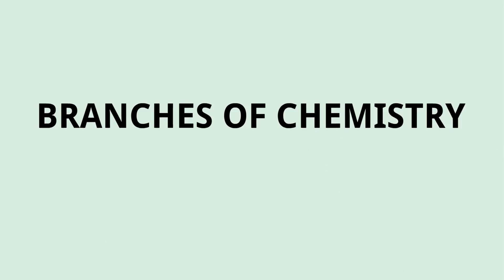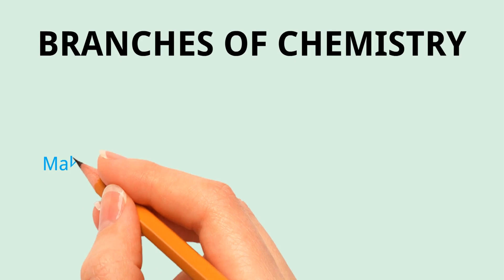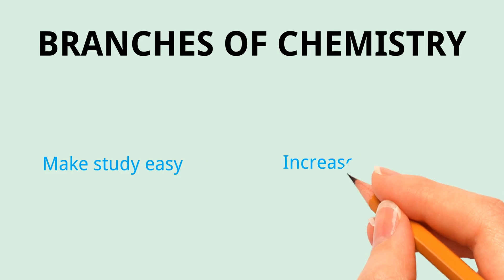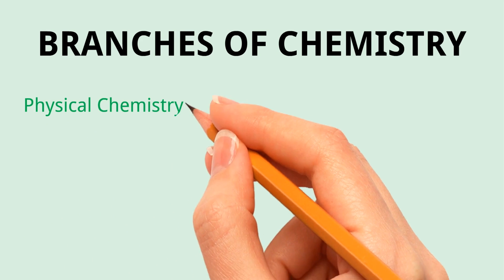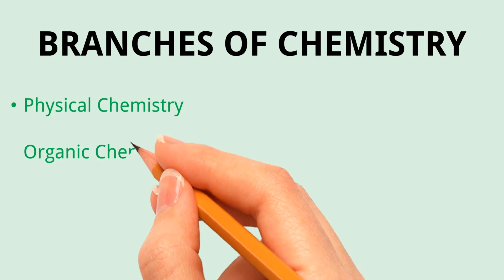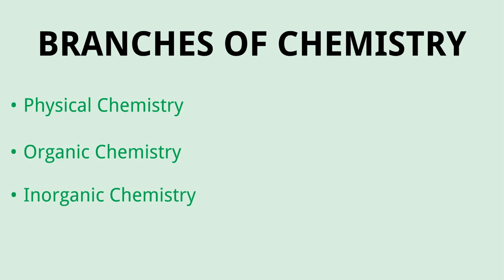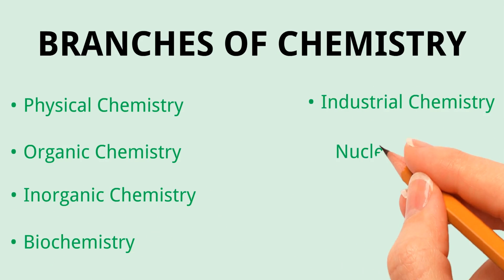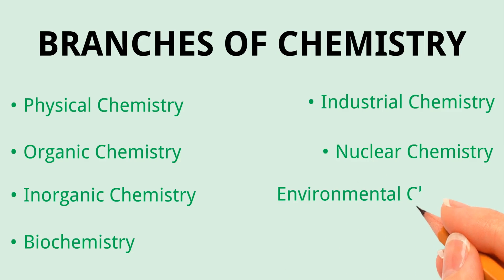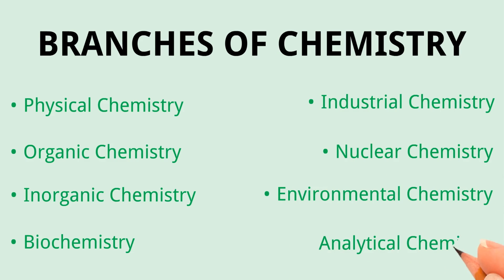Branches of chemistry. In order to make study easy, and due to increase in knowledge, chemistry is divided into branches. Here we will discuss the following branches: physical chemistry, organic chemistry, inorganic chemistry, biochemistry, industrial chemistry, nuclear chemistry, environmental chemistry, and analytical chemistry. Now we will discuss these branches one by one.